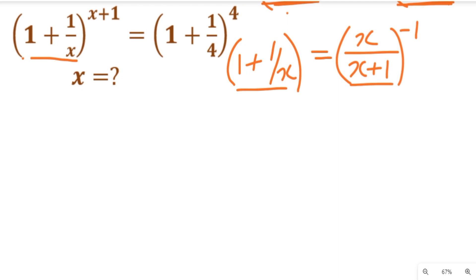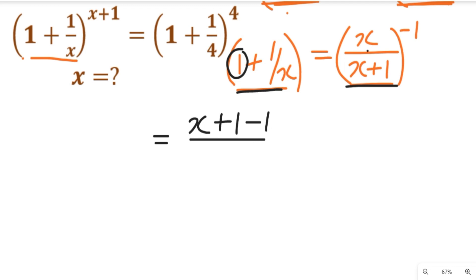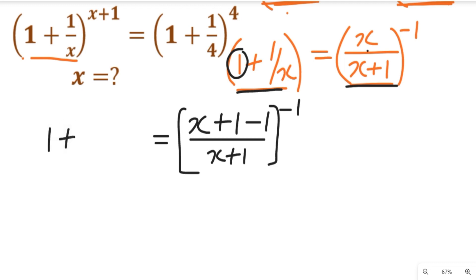We want to bring up a logical manipulation so we can arrive at something similar to the right-hand side. We have a one here, but there is no one on the right-hand side. So what we are going to do is add one and subtract one on the right-hand side — it still gives us the same equation, because one plus one minus one is still equal to zero, and the numerator will still have our x.